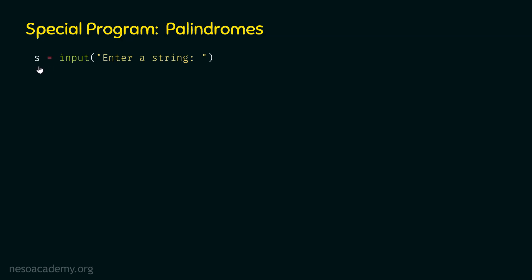Before writing the logic of this program, we first need to remove the white spaces and convert all the uppercase letters to lowercase letters in this string. Why is that the case? Let's say the user has provided the string 'Madam' where the first letter is capitalized. If we compare the first letter with the last letter, then in the eyes of the program, they are not the same — capital M is not the same as small m. But this is not the intention of the user. So we must go for case-insensitive comparison, and for this purpose, we can convert all uppercase letters to lowercase.